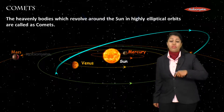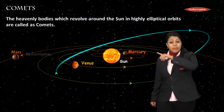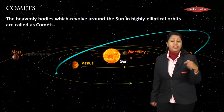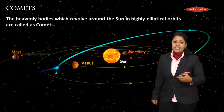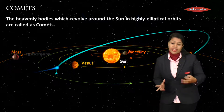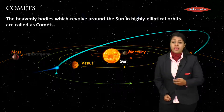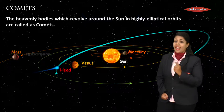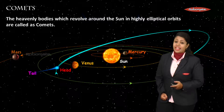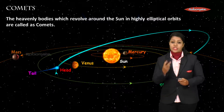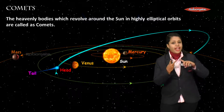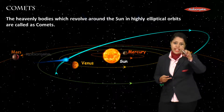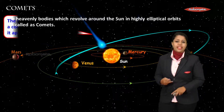Comets revolve in an elliptical orbit — the blue colored elliptical path you can see is the path of the comet. Let's understand the comet in detail. There is a bright sphere called the head of the comet, and it also has a tail. So a comet has two parts: the head and the tail.